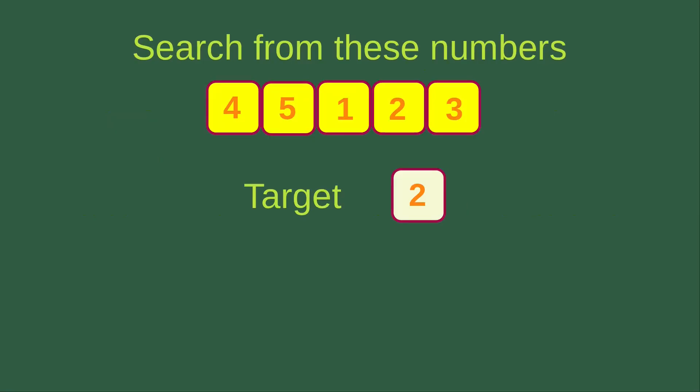Let us see an example. Suppose I want to search from these numbers, and my target is now two. That means I want to find two from these five numbers. What will be the process of the linear search?